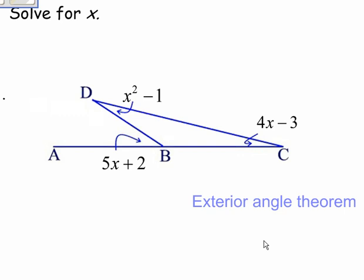Okay, so it's an exterior angle problem. In an exterior angle problem, we're going to take the exterior angle and set it equal to the sum of the non-adjacent angles inside the triangle. So it's going to be 5x plus 2 equals x squared minus 1 plus 4x minus 3.